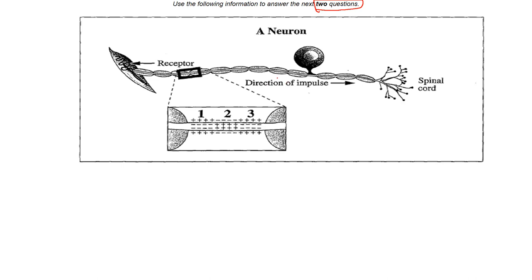When you get a diagram, take your time. I know people are stressed and want to get to the answer right away, but there aren't a lot of these questions on your final or midterm, so you want to make sure they count. Take the time to interpret what the diagram is talking about. Make notes all over your question — it's showing a neuron, and we can see the dendrites, the axon, the cell body, and the axon terminals.